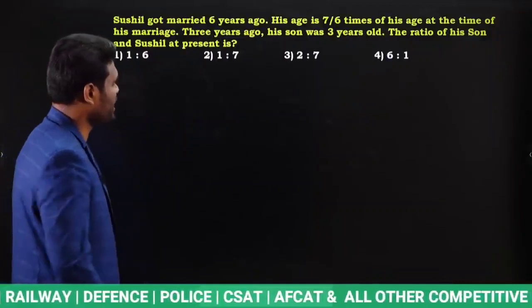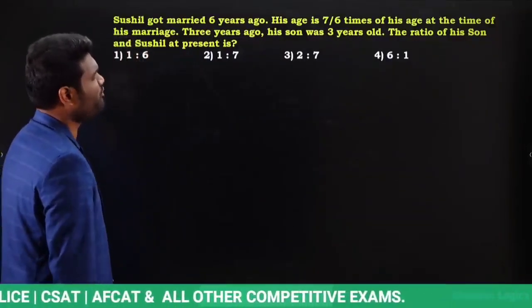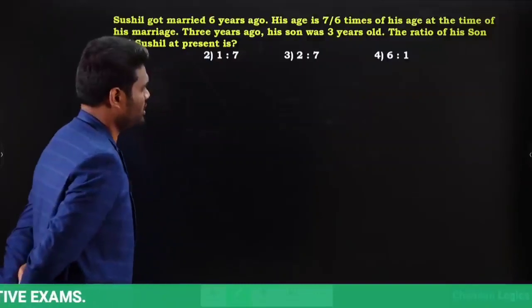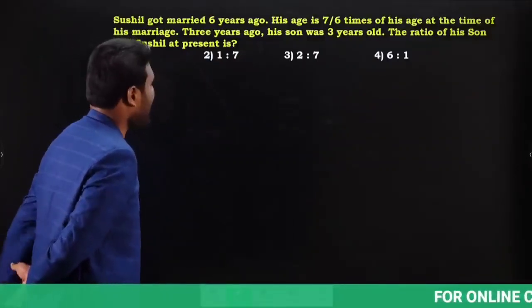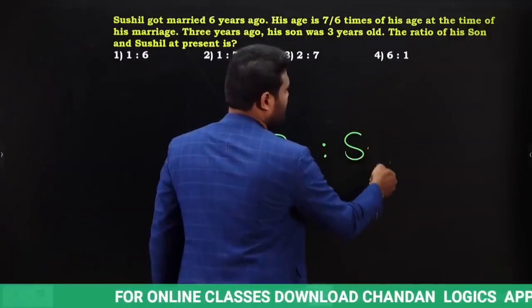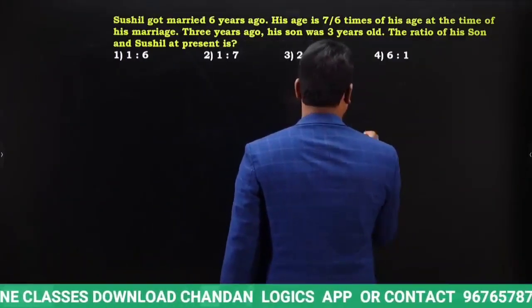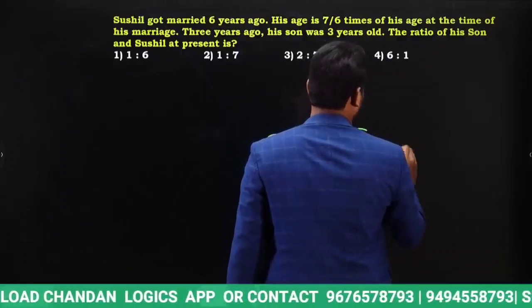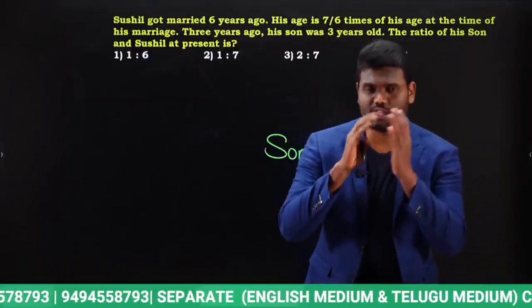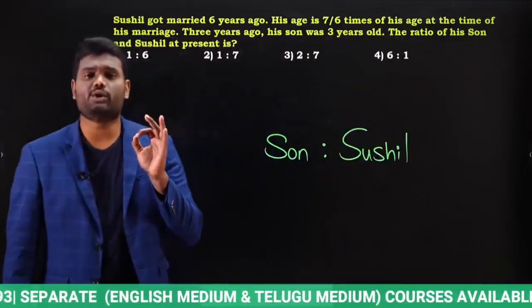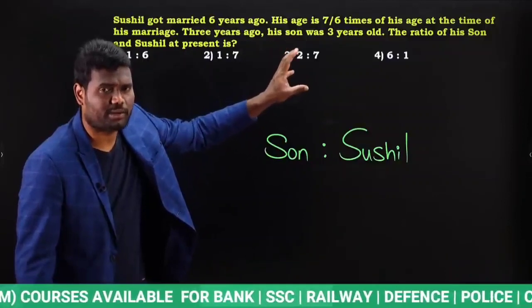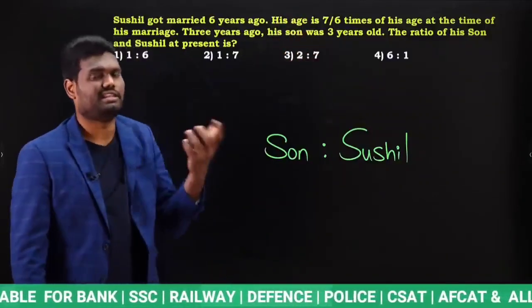Next question: Sushil got married six years ago. His present age is 7/6 times his age at the time of marriage. Three years ago, his son was three years old. We need the ratio of Sushil's son's age to Sushil's age at present. Most students don't understand the question carefully, but competitive exams are all about reading and understanding questions carefully to collect the key points.